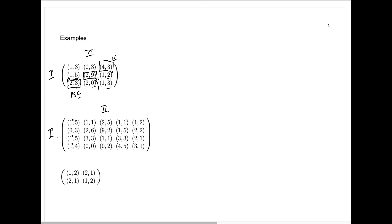In column 1 the highest number for player 1 is 1, and it occurs three times so we mark all of those. In column 2 the highest number in the first position is 3. In column 3 that highest number is clearly the 9. In column 4 we have the 4, and in column 5 we have the 3.